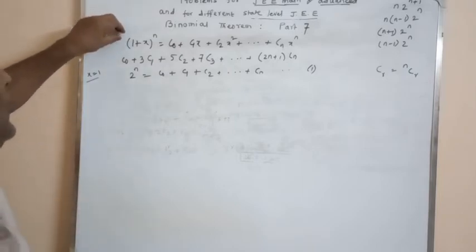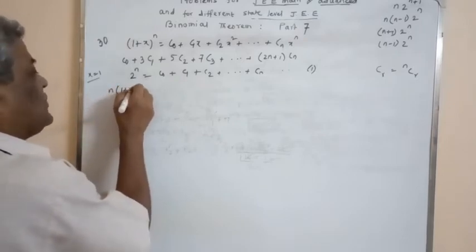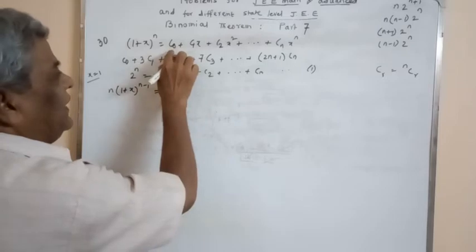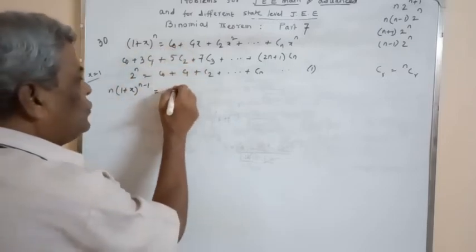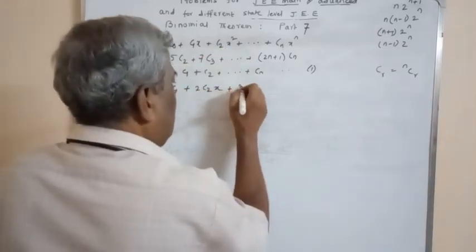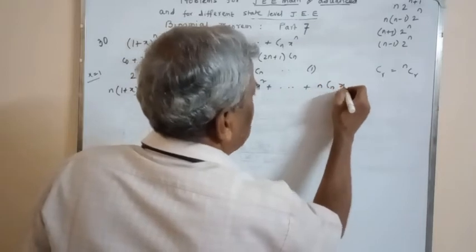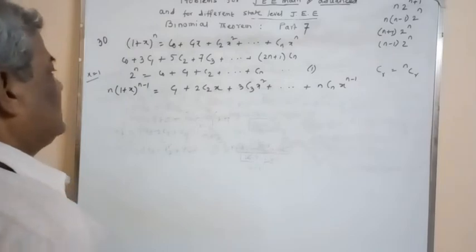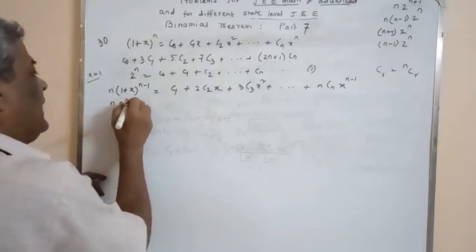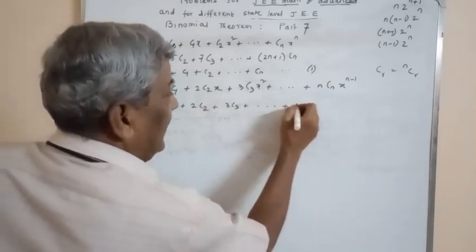Next, differentiate both sides of the given expansion. We get n(1+x)^(n-1) on the left-hand side. On the right-hand side, c0 is constant so its derivative is 0. So we get c1 + 2c2x + 3c3x² + ... + n·cn·x^(n-1). Now put x=1 on both sides, so we get n·2^(n-1) = c1 + 2c2 + 3c3 + ... + n·cn.